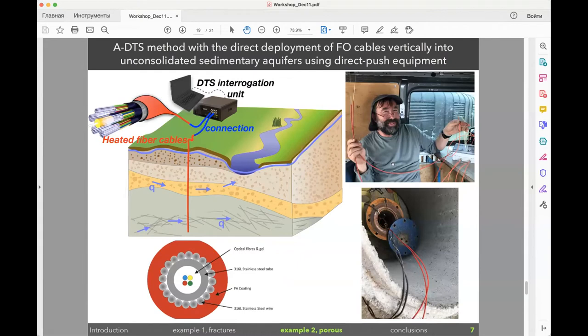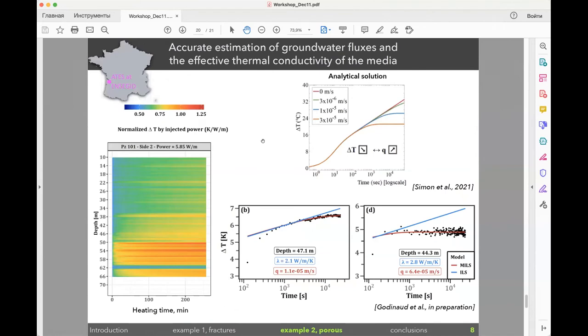We performed these experiments for the first time in Bordeaux at the university campus where there is an aquifer thermal energy storage site which is developed in order to heat and cool the building and the campus. We wanted to perform this method in order to characterize the site in terms of hydraulic properties and thermal properties before the installation of the borehole for the geothermal project. An example of the data is here. We have the cable depth up to 36 meters and we heat it for about three hours.